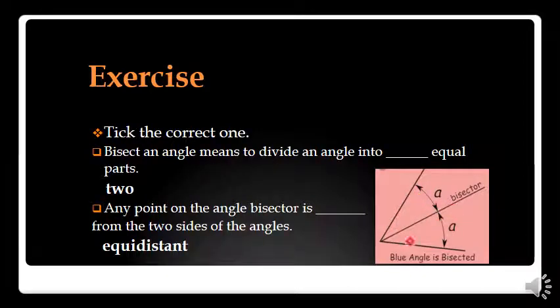Second one is: any point on the angle bisector is from the distance from the angle. We talk about this one is an angle bisector, and any point from angle bisector from here to here and from here to here, both of these are equidistant.